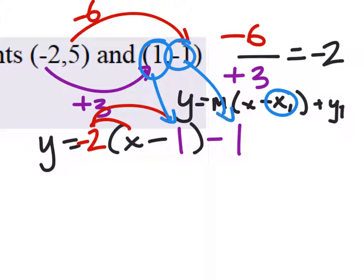And the negative 1 right here, which would have been right there in the equation. And what are the instructions again? To write this in slope-intercept form. So from here, all we've got to do is distribute that negative 2.